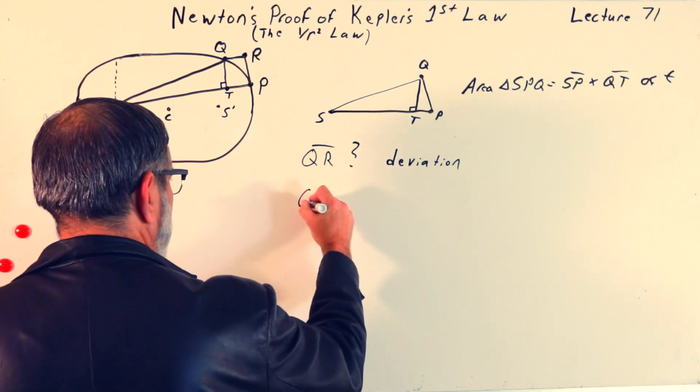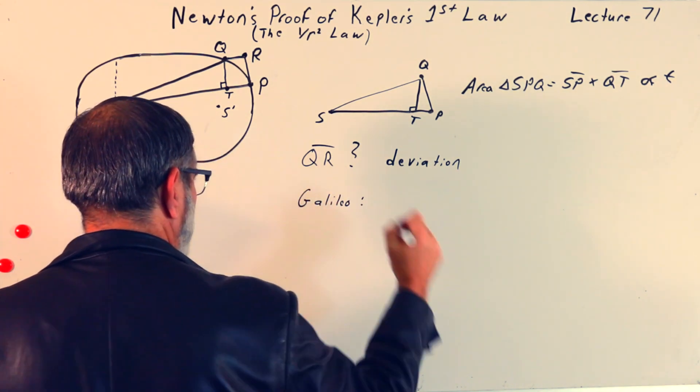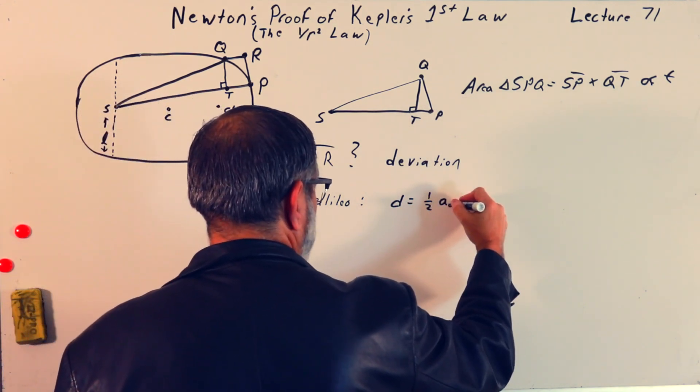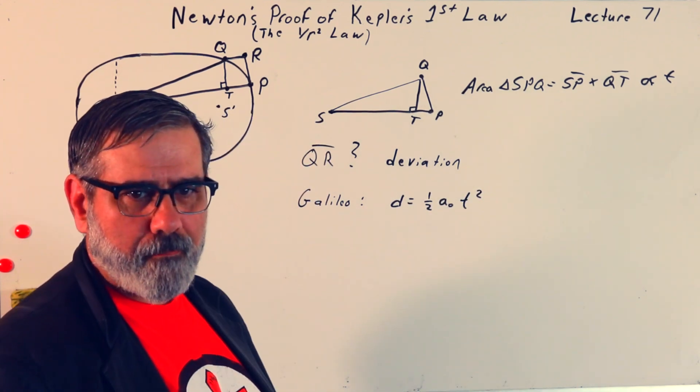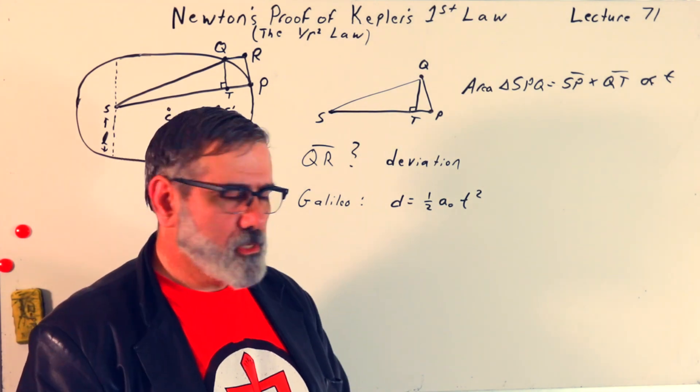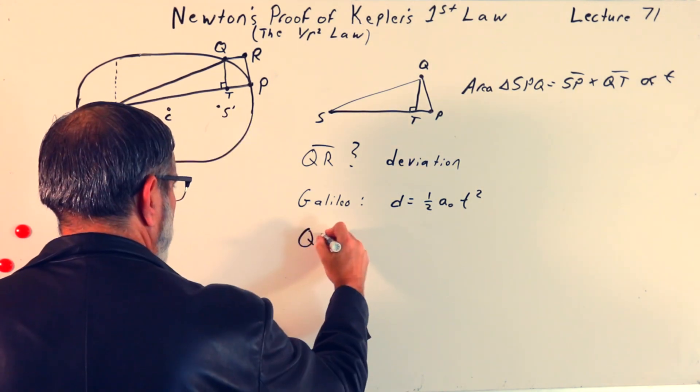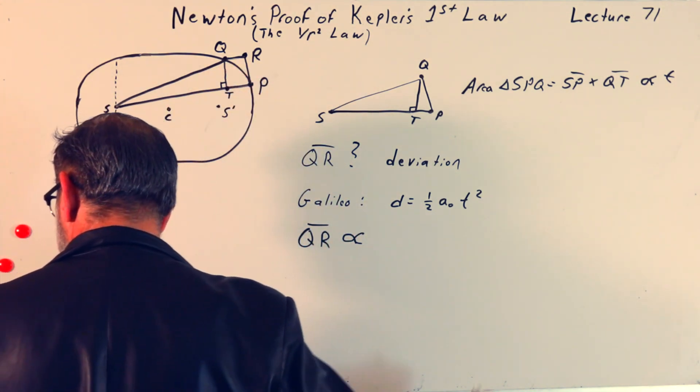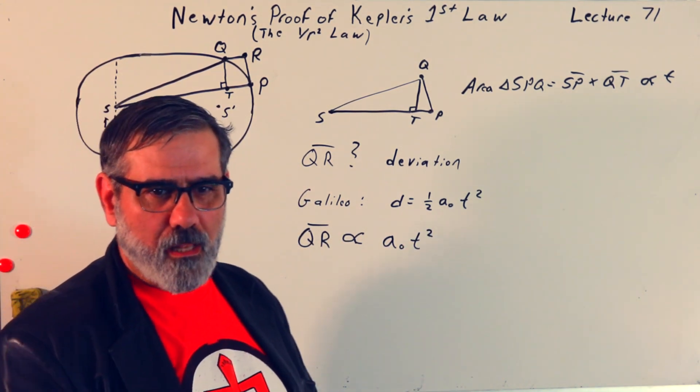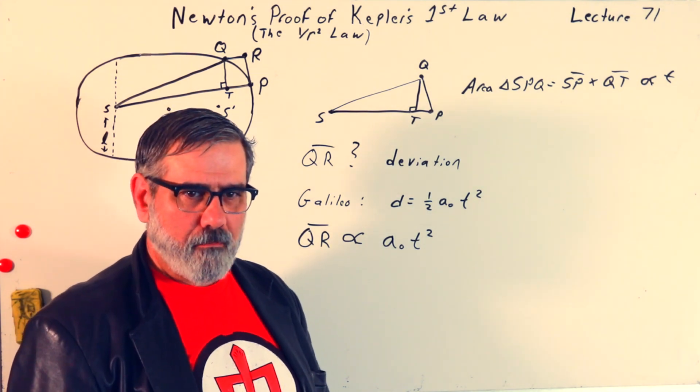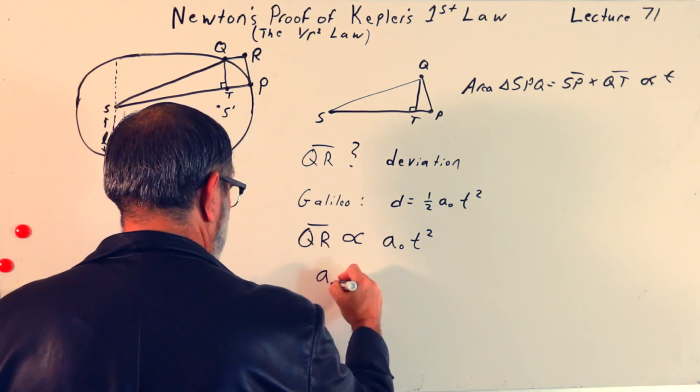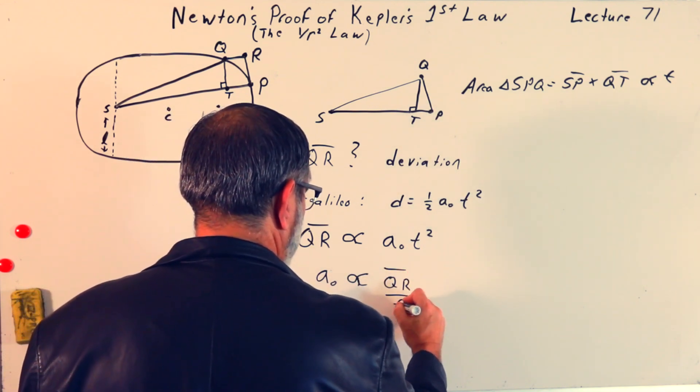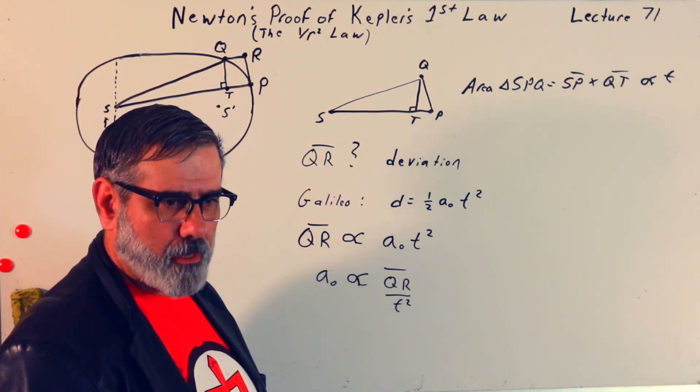So, if the interval that we're talking about over which the impulse is applied is short enough, we can treat it as if the force is just constant during that time. So, why is that useful? Well, because remember that Galileo had told us that the distance traveled is equal to one-half times a constant acceleration times T squared. This was his inclined plane experiments. And so, Newton knew this, of course, and so this is what he's thinking of.